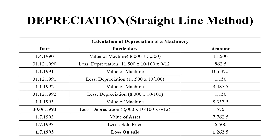So the actual value of the asset as on 1st January 1993 is Rs. 8,337.50. Now for 1993, since the machine was sold on 30th June, we calculate 6 months of depreciation: 11,500 × 10 ÷ 100 × 6 ÷ 12 = Rs. 575. So the book value on the date of sale is Rs. 7,762.50, but the sale was for Rs. 6,500 — so there is a loss of Rs. 1,262.50.